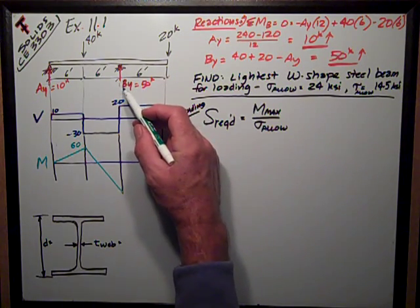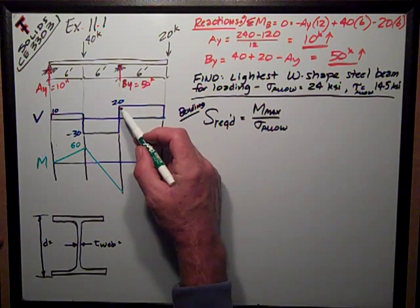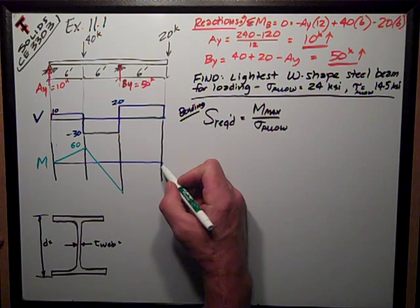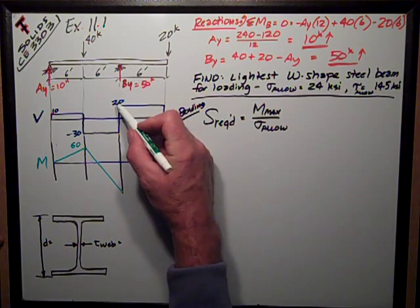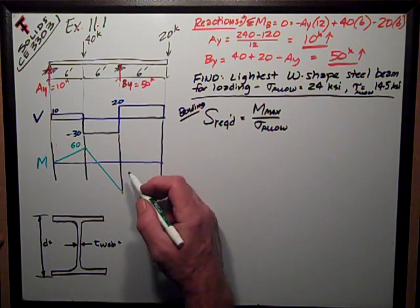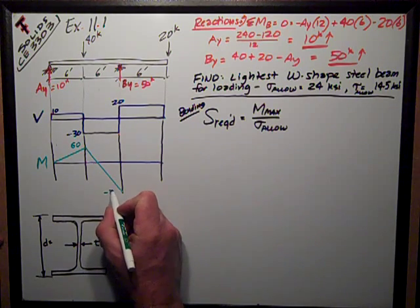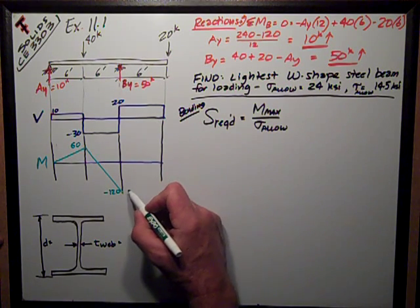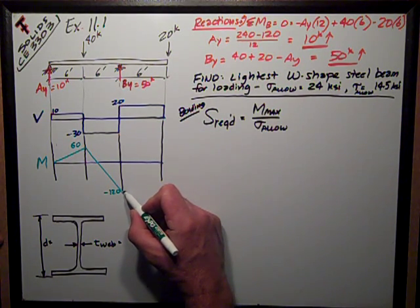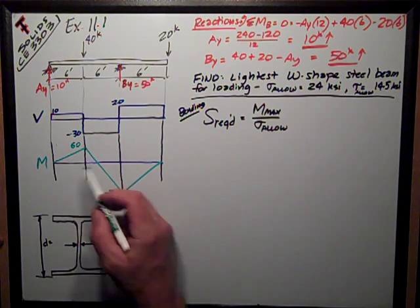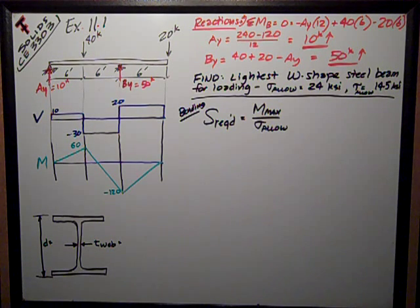Finally, at this support at B, my shear reverses to positive 20, so I'm going to have a positive slope. I know I'm going to be going to zero. I check that number with the area under the shear diagram, 20 times 6, or positive 120. I need to label this as negative 120. So 6 times 20 is 120, so that takes me back, adding that to negative 120 takes me to zero. So there's my moment diagram, nice and easy.